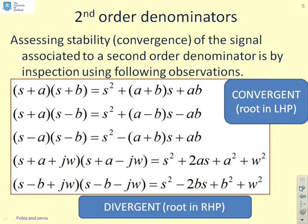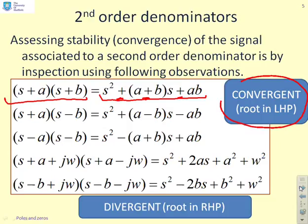What about quadratic factors? If we have s plus a times s plus b and multiply it out, you get s squared plus a plus b s plus ab. You'll see lots of positives wherever you go. That's good. That's convergent.